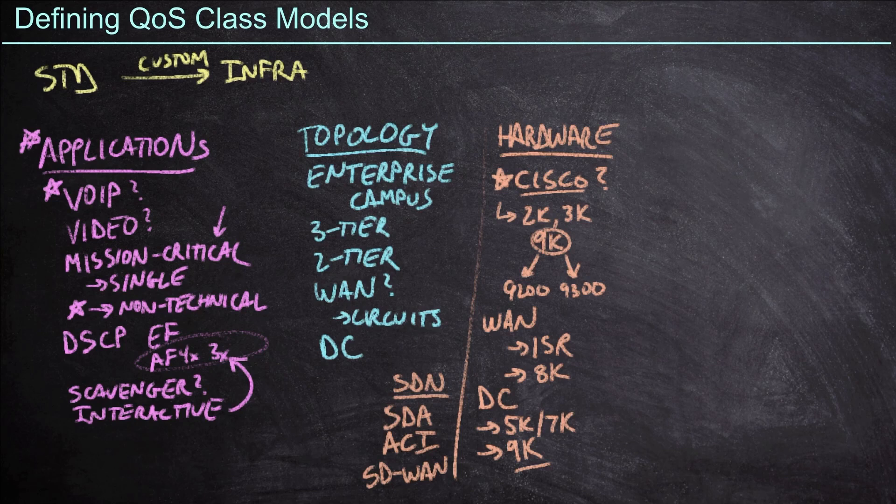So we've done a great job of drawing out all of the challenges with deploying QoS into our network infrastructures. But do we have hope? Can we deploy QoS? I mean, where do we even start? And fortunately, we have a great starting place. And that would be defining the QoS policy.